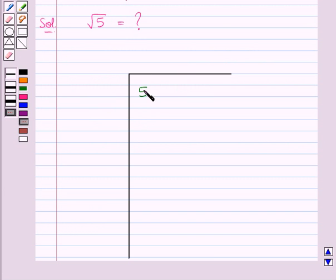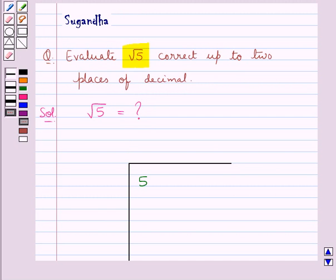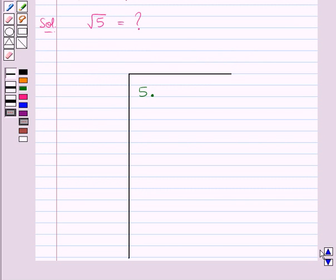We will write the number 5 here. Since we need to find the value of square root 5 up to 2 places of decimal, we will first find it up to 3 places of decimal and then round it off to 2 places. So we write the number 5, put a decimal, and place 6 zeros after the decimal. Now we will make pairs of these digits.